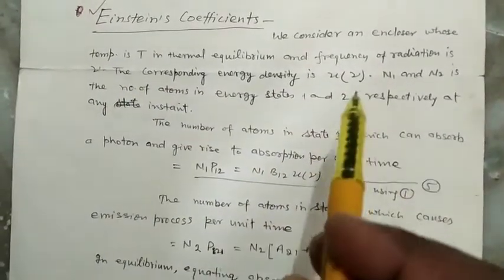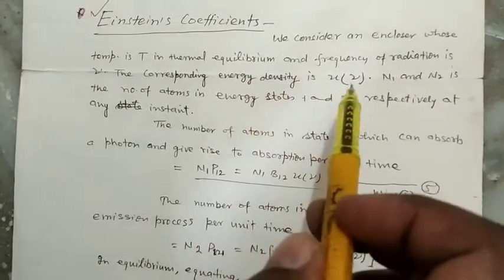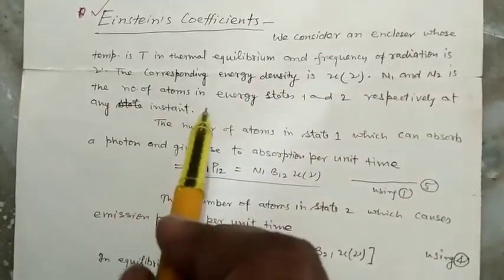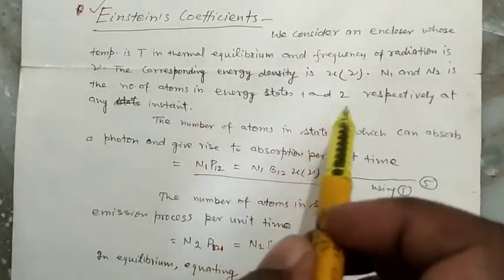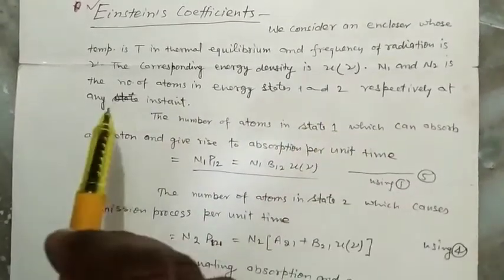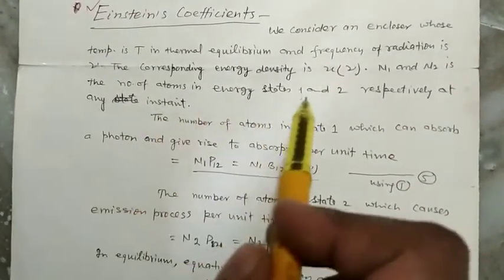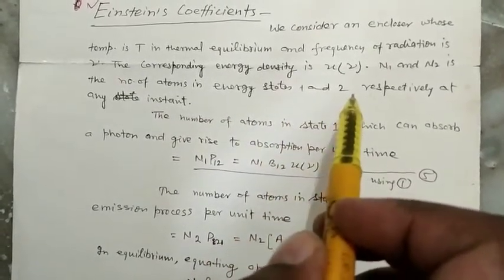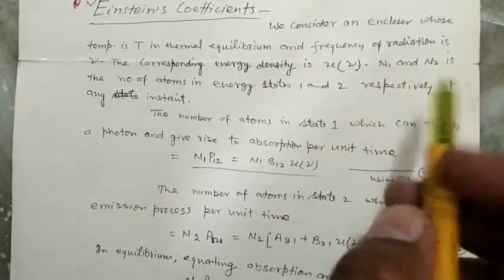The corresponding energy density is U(ν). At any instant, in energy state 1 or 2, the number of atoms are N1 and N2.